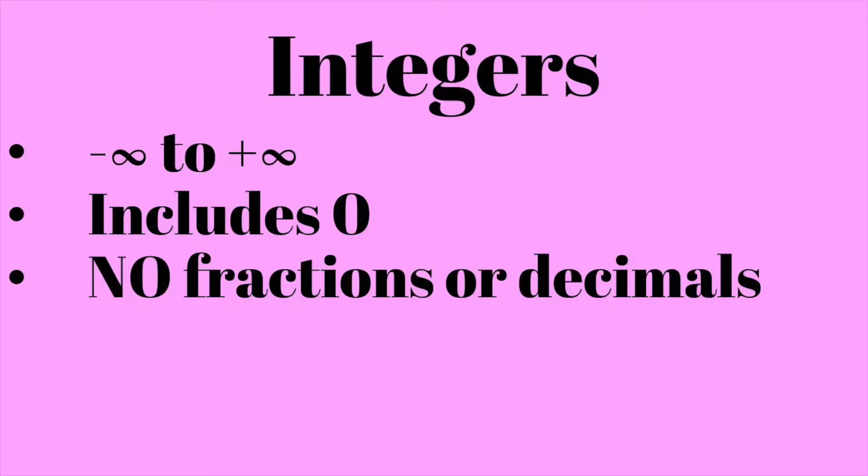A smaller subset of real numbers are integers. Integers are sometimes colloquially known as whole numbers, but basically they're any number between negative infinity and infinity that are not fractions or decimals. So within this, you'll have negative 10,000, negative 1, 0, 1, 10,000, positive 20,000, et cetera.